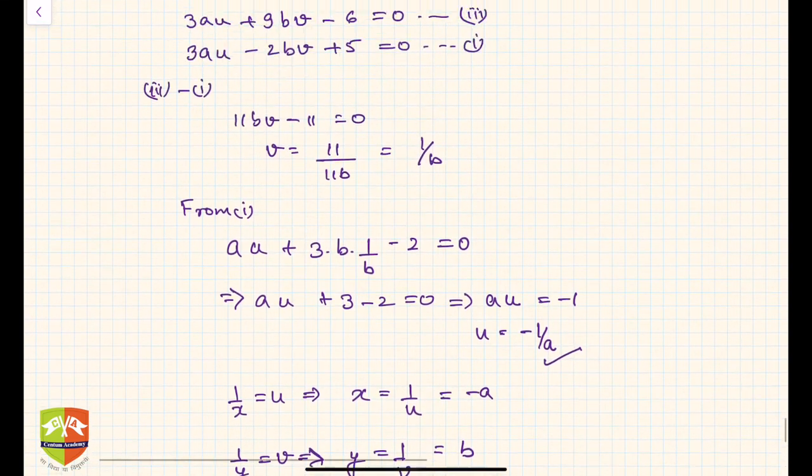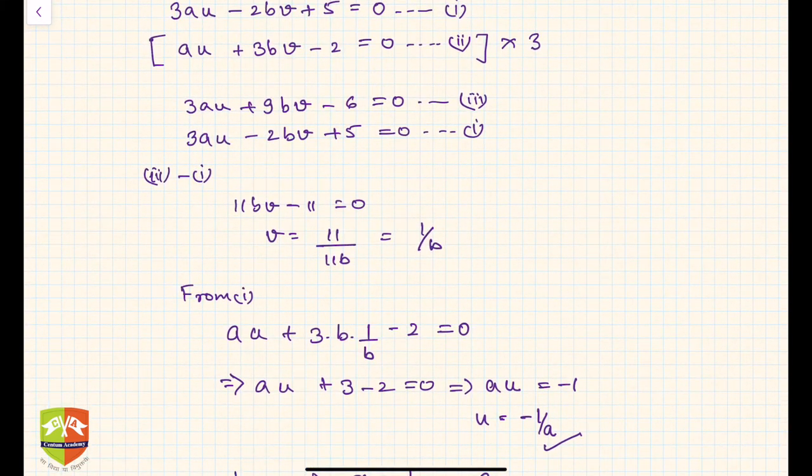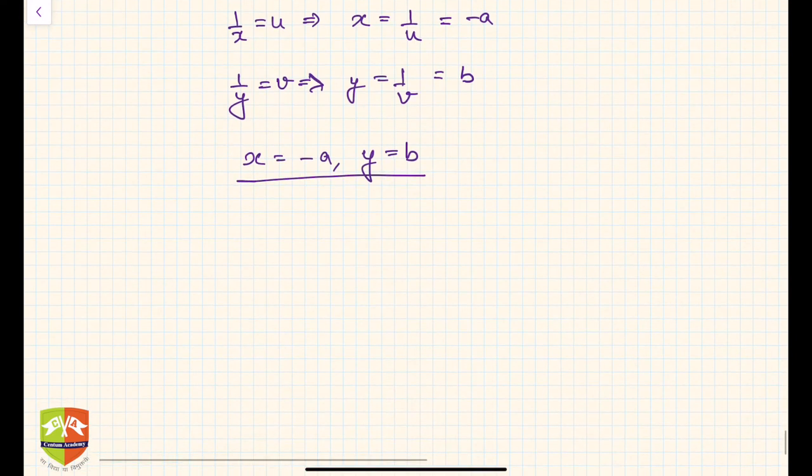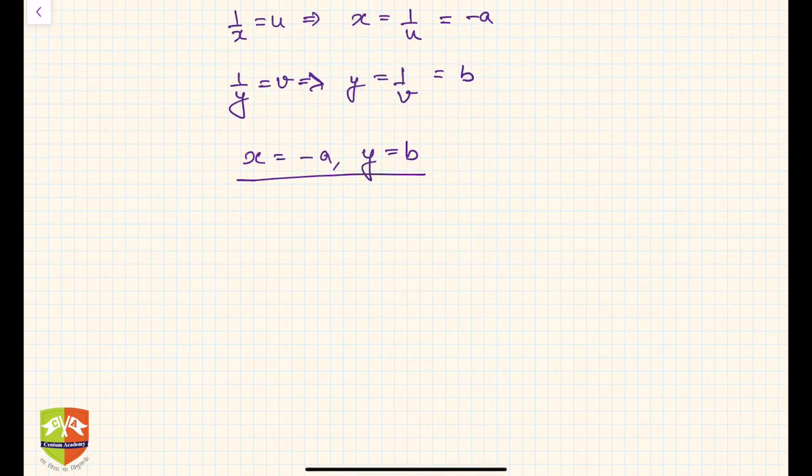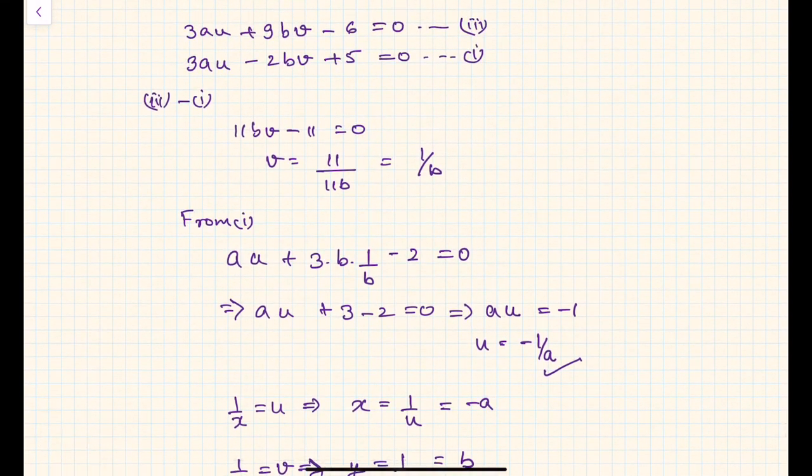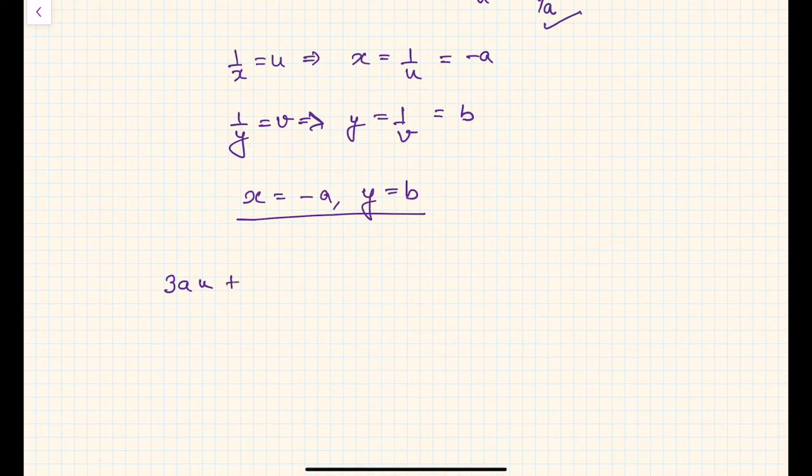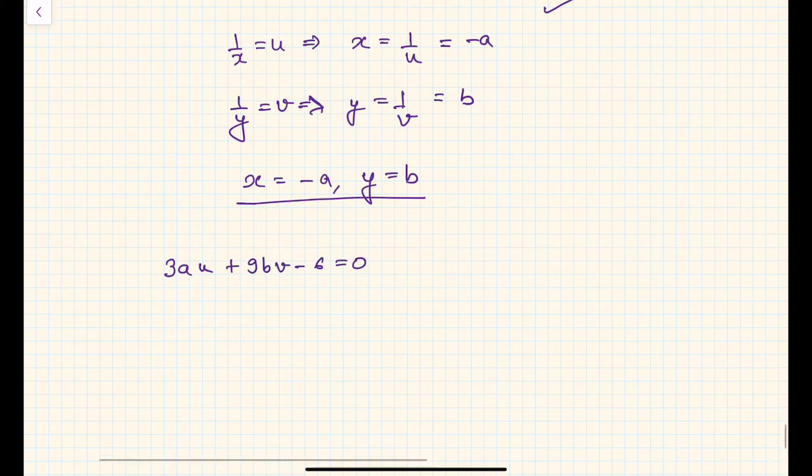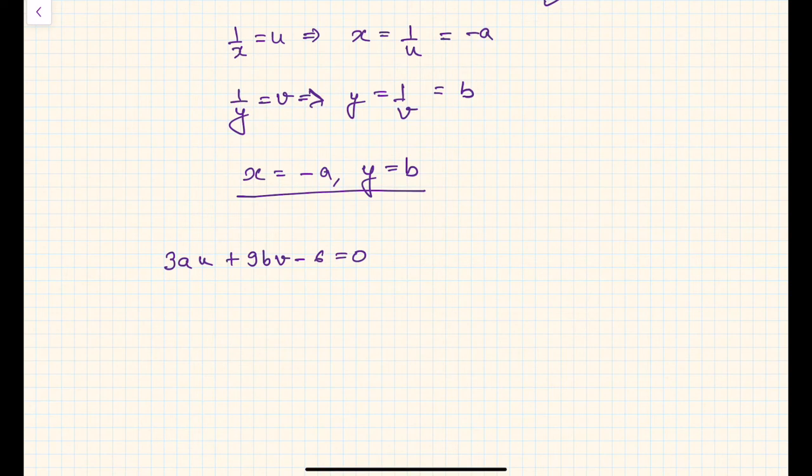Let's put in any of these equations. Let us take the first equation. The first equation was 3 upon x minus 2b upon y plus 5 equals 0.